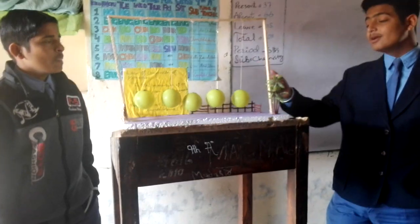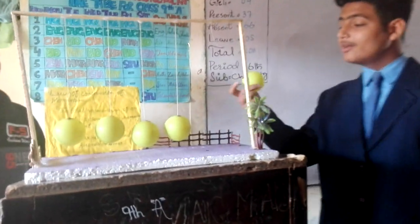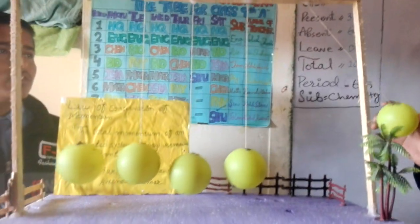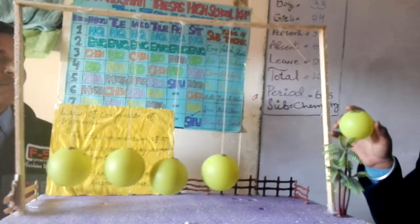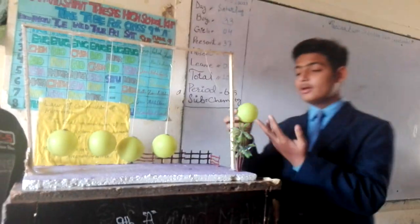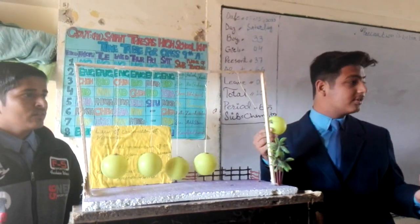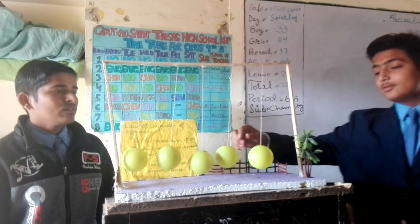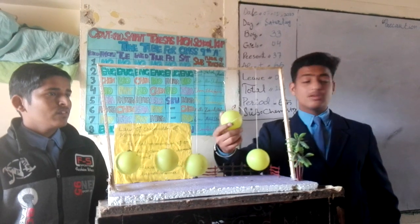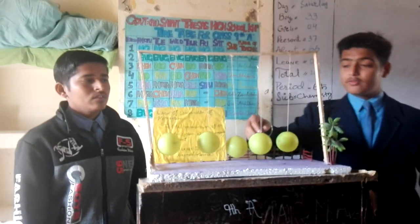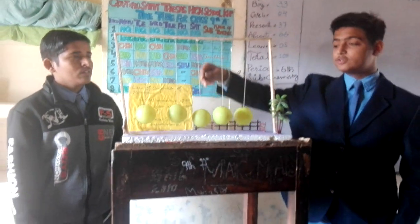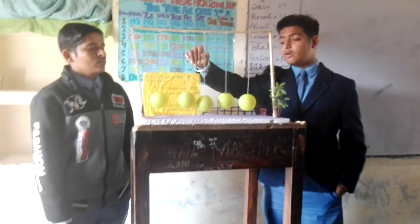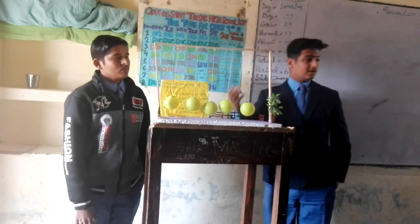So we made this project — when we carry this ball from here and drop it from a height, it has mass and also velocity. When it hits another ball, the velocity transfers from these balls to another ball, that's why it swings out. So this is our project.